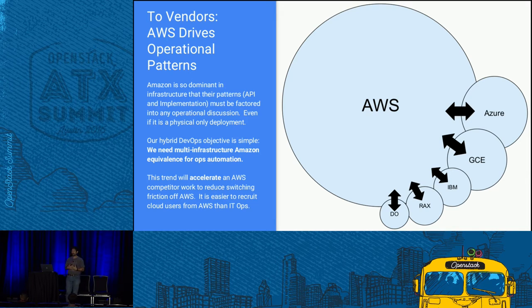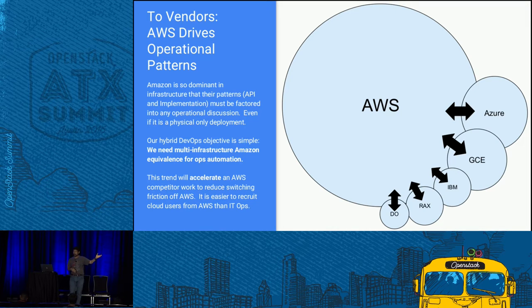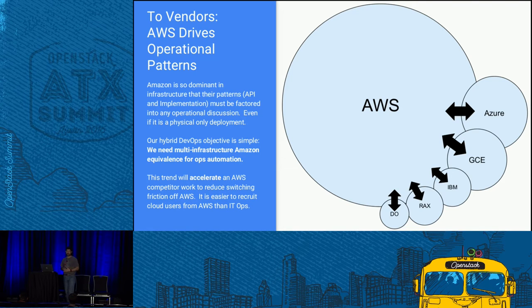If you're a product company and you're not selling into Amazon, you have effectively limited your market to zero. I know the OpenStack vendors here might disagree, but if they were selling into OpenStack and Amazon, their market would be 99 times larger. That's the way cloud is right now — you can't overlook the statistics, you can't ignore that Amazon is the gorilla.